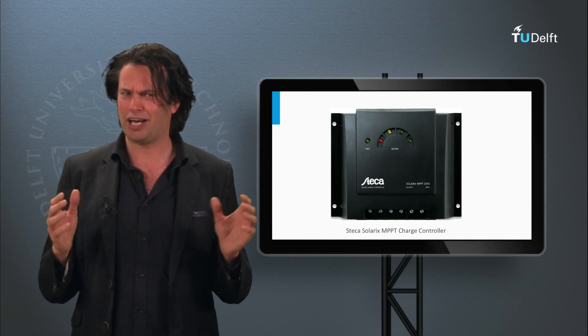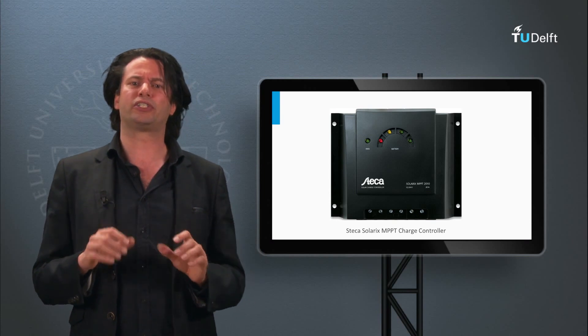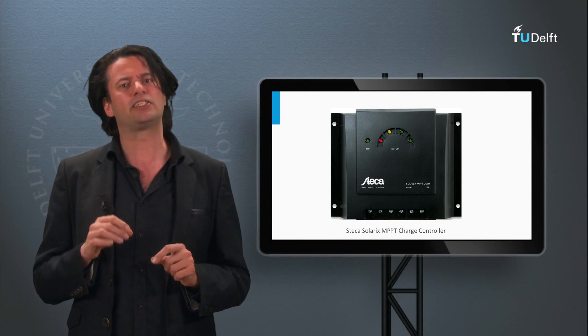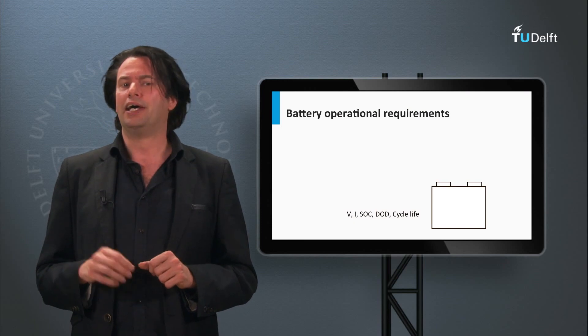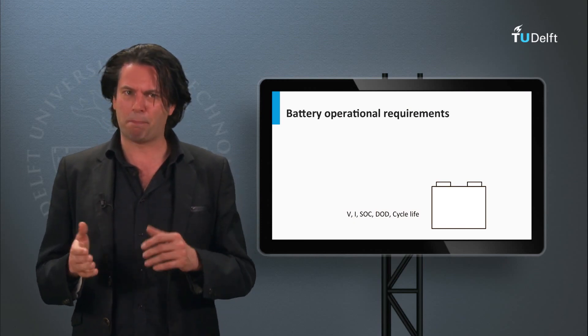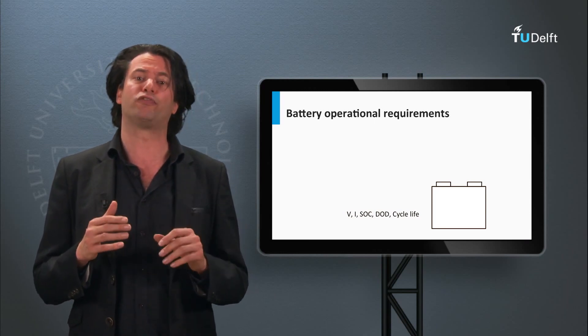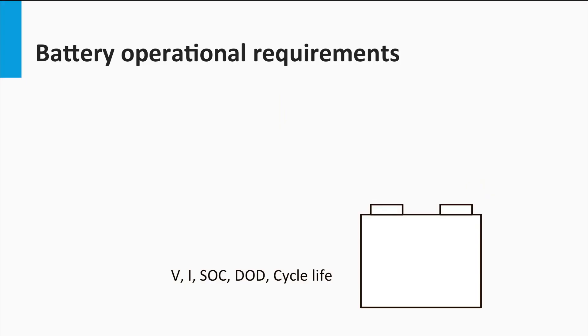What is a charge controller and why do we need it? Note that the use of a charge controller is found in a PV system with battery usage. In most cases, this would mean a stand-alone PV system. In the previous video about battery parameters, you learned the importance of having the right amount of current and voltage being provided to the battery.